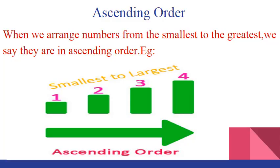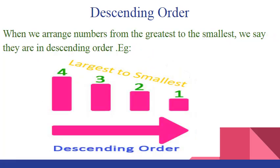Ascending order: when we arrange numbers from the smallest to the greatest, we say they are in ascending order. Now let's see this example. Here we have 1, 2, 3 and 4. These numbers are arranged from the smallest to the greatest, so we say these numbers are arranged in ascending order.